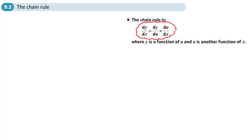This helps us to differentiate functions of a function. I'm going to show you how it works, and then after that I'm going to show you the easy way of doing it without having to refer to the chain rule formula.